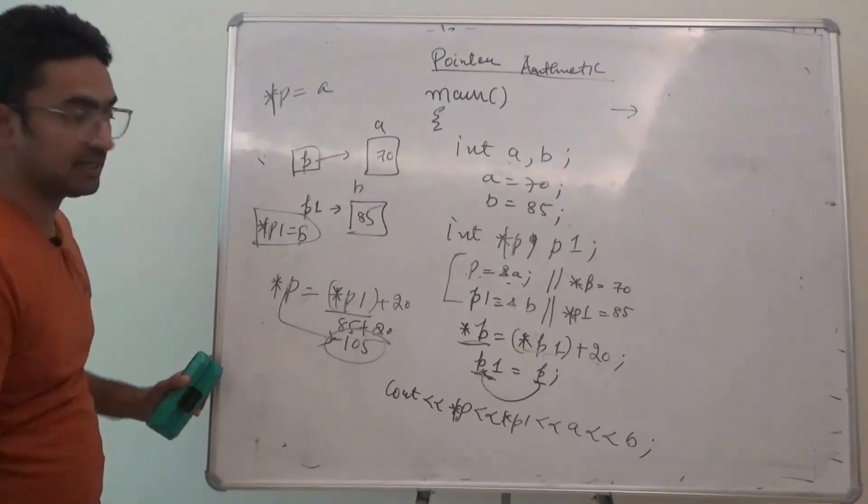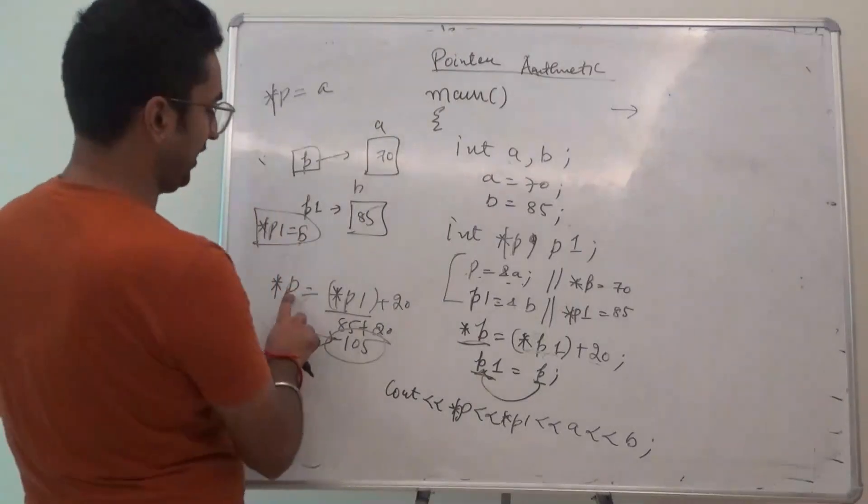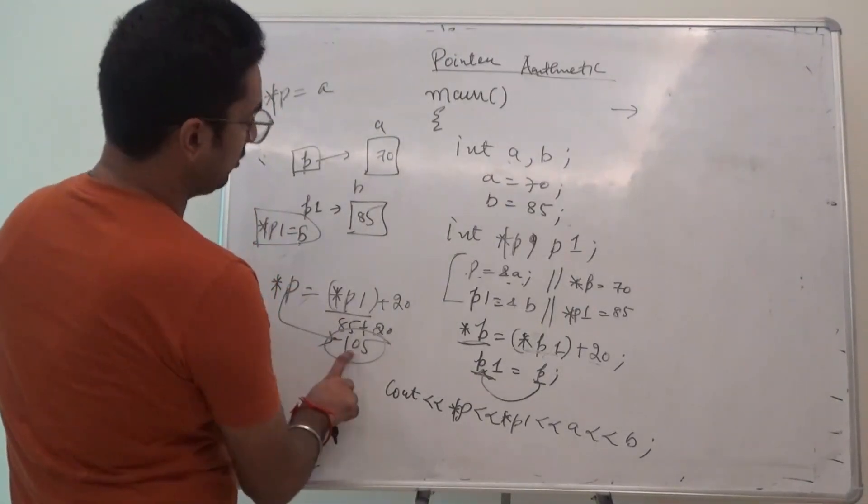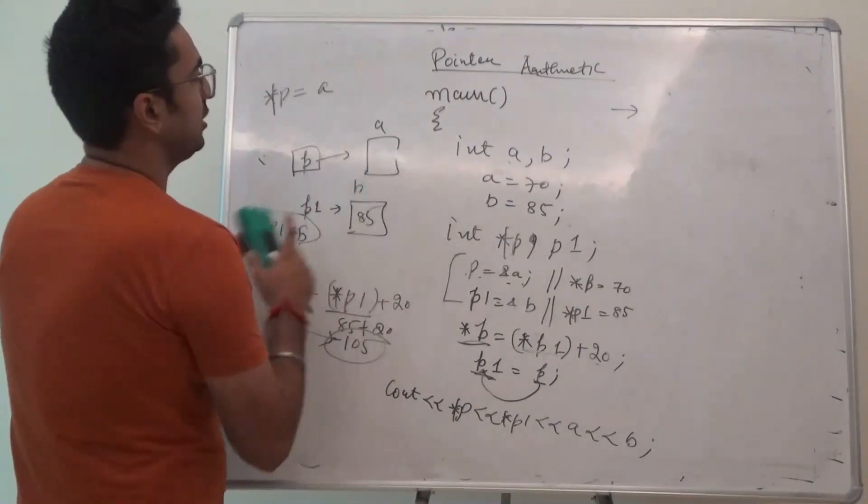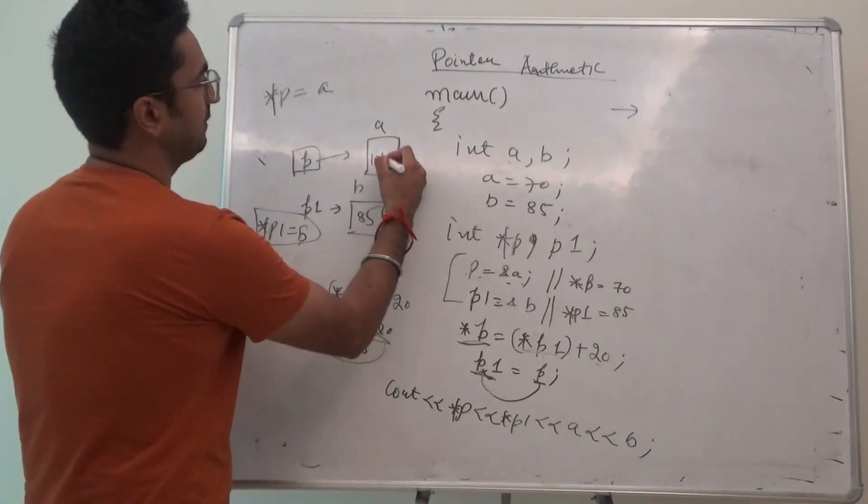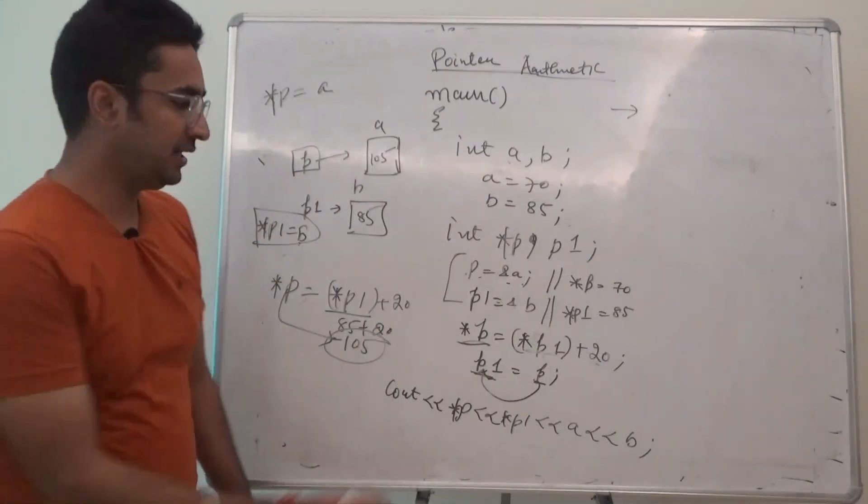Now, star of p value is 105. It means p is pointing to a variable whose value is 105. This value is updated. Right? This answer is updated.